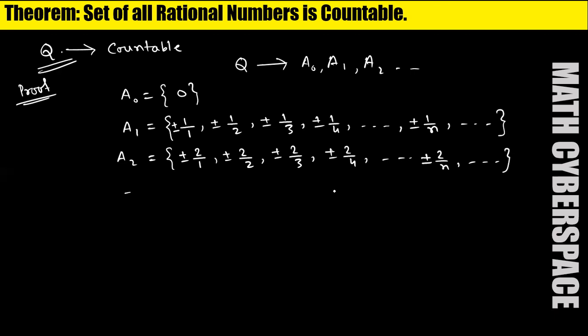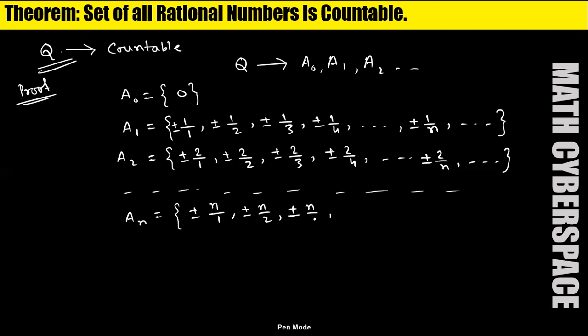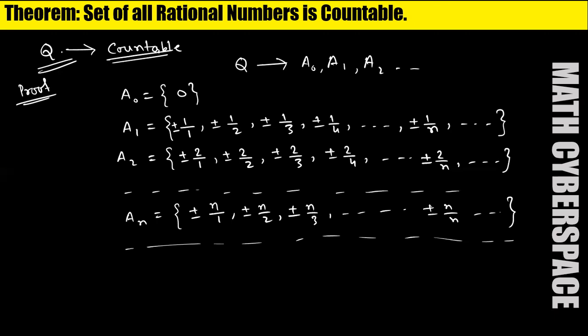In this way, we can write An equals ±n/1, ±n/2, up to ±n/n, and so on — and this will be infinite. Now we have to show that Q is countable, meaning we have to get a one-to-one correspondence between the elements of Q and the natural numbers.